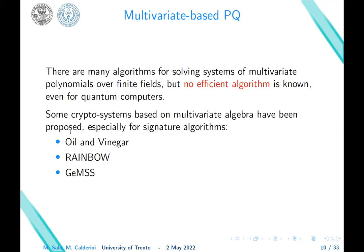There are many algorithms for solving systems of multivariate polynomials over finite fields, but no efficient algorithm is known even for quantum computers. Some crypto systems based on multivariate algebra have been proposed, especially for signature algorithms, the classical Oil and Vinegar, and the more recent Rainbow and GeMSS.